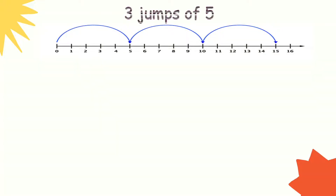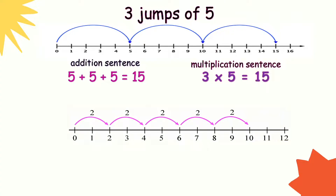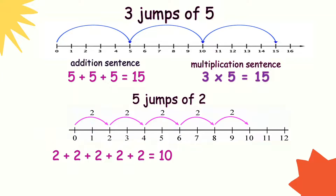Using the number line: there are 3 jumps of 5, so 5 plus 5 plus 5 equals 15, and the multiplication sentence is 3 times 5 equals 15. Then, 5 jumps of 2: 2 plus 2 plus 2 plus 2 plus 2 equals 10, and that is 5 times 2 equals 10.